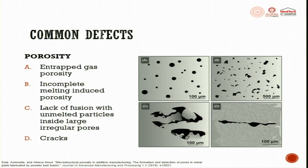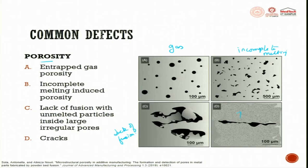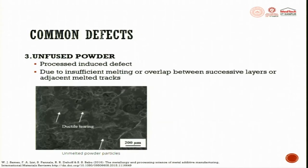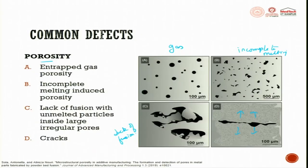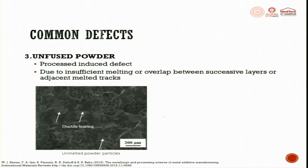There are also cracks - you can have gas porosity, incomplete melting, lack of fusion, and cracks due to tensile stresses. Unfused powders are also seen - these are all unmelted powder particles. This is a process induced defect due to insufficient melting or overlap between successive layers or adjacent melting tracks.